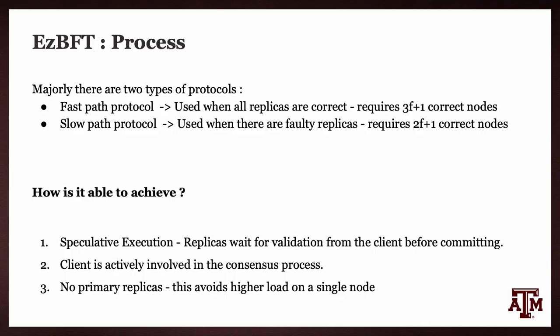Coming to the protocol overview, there are two types of protocols: a fast path protocol and a slow path protocol. Fast path is used when all replicas are correct and requires 3F plus 1 correct nodes. Slow path is used when there are faulty replicas, tolerating F Byzantine faults with 2F plus 1 correct nodes. EZBFT achieves this through speculative execution — replicas speculatively execute the result and pass it to the client, the client compares the messages and asks replicas to commit, and only then do replicas actually commit. The client is actively involved in consensus, and the absence of a leader avoids higher load on a single node.